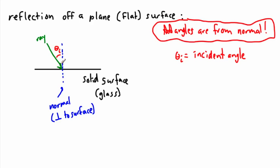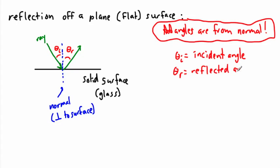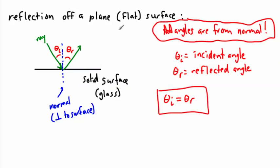Angles are defined this way, so make sure you use them correctly. Reflection is really easy: whatever angle came in, it's going to be the same angle going out. So theta r — the reflected angle — equals theta i. That is the key equation for reflection: theta i equals theta r.